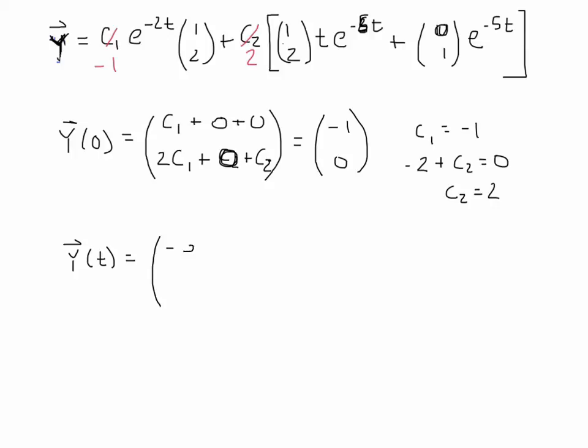I'm going to do this by plugging in that c1 we just found was negative 1, and that c2 is 2, and then I'm going to multiply everything through. So first term here, I've got negative 1 times 1 on the top times that e to the negative 2t. So that is a negative e to the negative 2t on the top. And then on the bottom, it looks like it's negative 1 times 2. So negative 2e to the negative 2t. Now for the second part, I've got 2 times 1 and 2 times 2. So top is 2 times 1, bottom 2 times 2 times this t term. So on the top, 2 times 1 is 2te to the negative 5t. And on the bottom, I'm going to have 4te to the negative 5t. And then on this next term, I've got 0 on the top, so I don't need to add anything there. And then I've got 2 times 1, so that's plus 2e to the negative 5t.